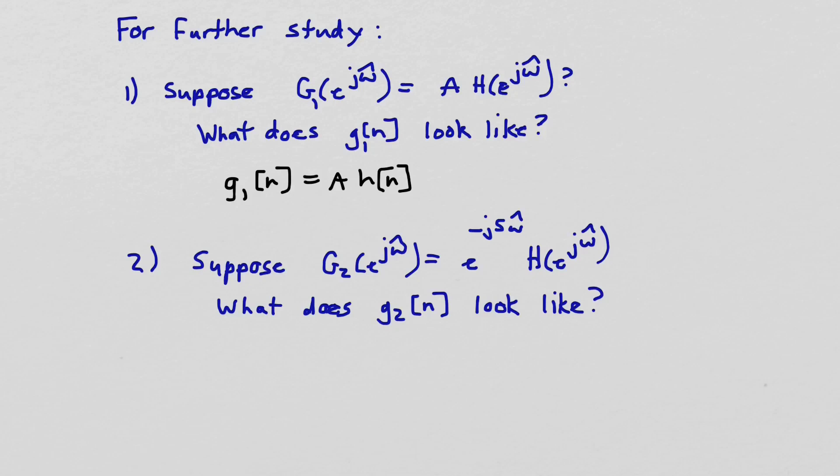Then to answer the second question, we use a different Fourier property. Now this transform was our old discrete low-pass filter, and we multiplied by e^(-j5ω̂), and that just delays the impulse response. Because if we multiply by a complex exponential like this in the frequency domain, that corresponds to a delay in the time domain. So we can say that G₂[n] will just be H[n-5]. Because the amount of the delay is just the number that you find there. So we've answered these two questions just using properties of the discrete-time Fourier transform. Those transform properties can really help us solve problems without having to go back through and recalculate the full inverse transform.